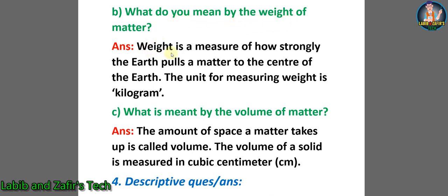Question B: what do you mean by the weight of matter? Answer: weight is a measure of how strongly the Earth pulls a matter to the center of the Earth. The unit for measuring weight is kilogram. Question C: what is meant by the volume of matter? Answer: the amount of space a matter takes up is called volume. The volume of a solid is measured in cubic centimeter, that is cm³.